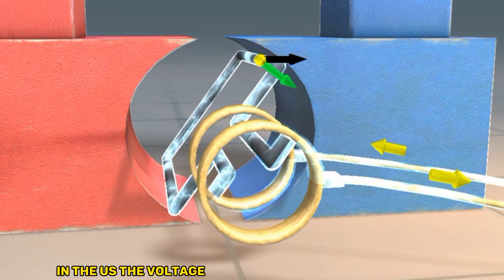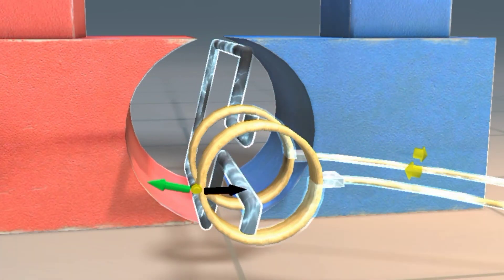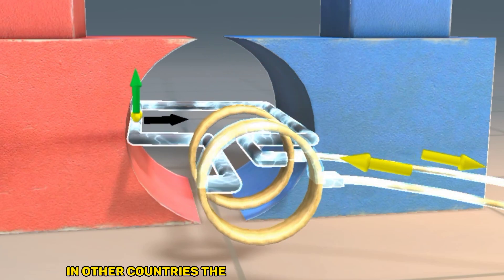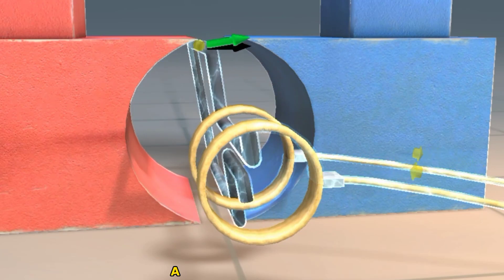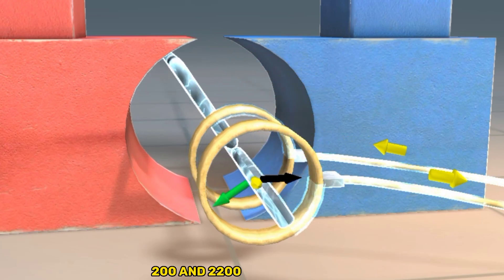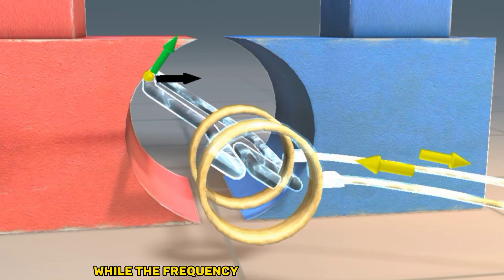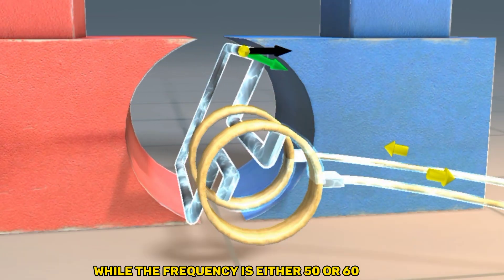In the US, the voltage is 120 volts, with a 60 Hz frequency. In other countries, the voltage might be 110, 120, 127, 220, 230, or 240 volts, while the frequency is either 50 or 60 Hz.